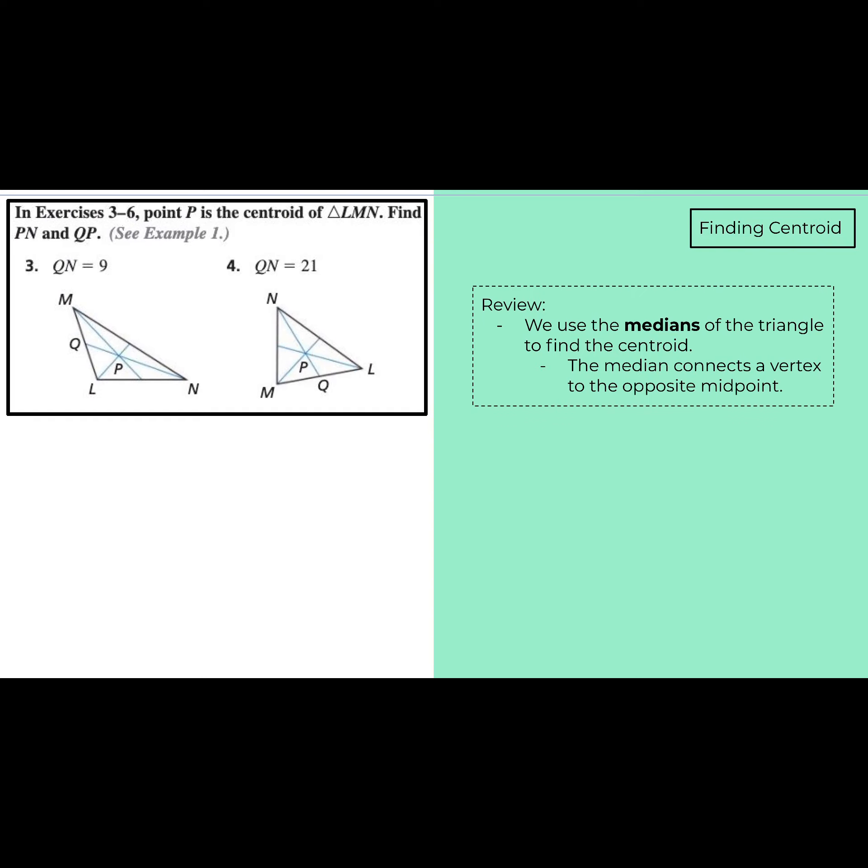So finding centroid. Remember, the lines that we use to find the centroid are the medians. And the median connects the vertex to the opposite midpoint. So like you see in those triangles, the vertex to the midpoint would be our cent, where all of those meet would be our centroid.